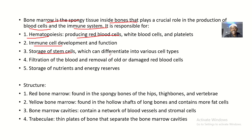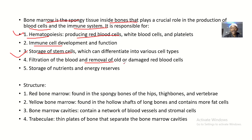Other functions include storage of stem cells, which can differentiate into various cell types. We also have hematopoiesis itself and storage of stem cells as two distinct points. Then also filtration of blood and removal of old and damaged red blood cells — that is a function of the reticuloendothelial system. And then we have storage of nutrients and energy reserves.